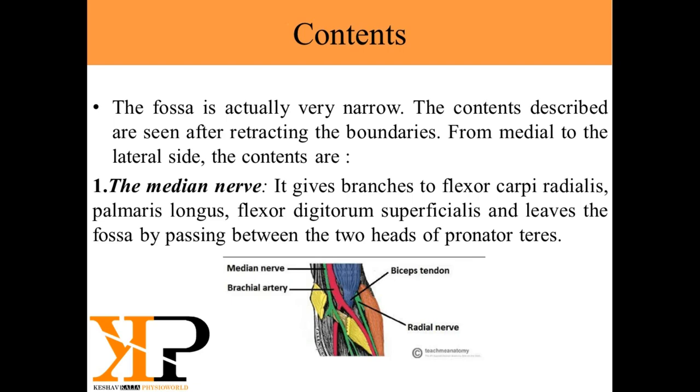The median nerve gives branches to the following muscles: first is the flexor carpi radialis, second is the palmaris longus, and third is the flexor digitorum superficialis.